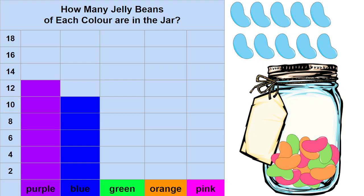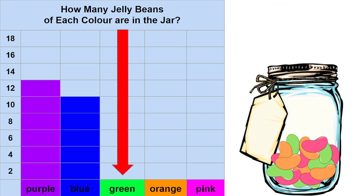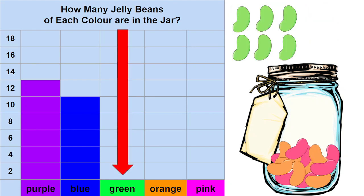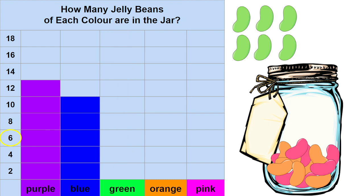Let's look at our next color: green. I'm going to take the green ones out of the jar and we're going to count them together: 2, 4, 6. We'll find 6 on our graph and then we'll fill in the green column all the way up to 6.